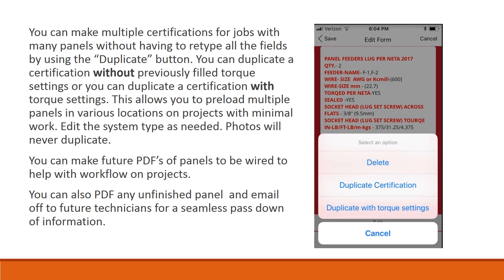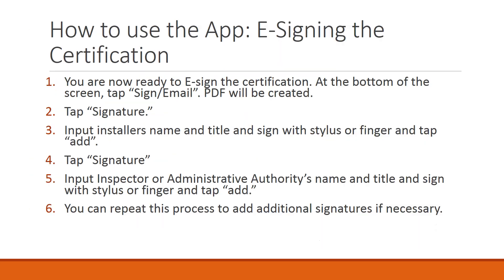E-signing the certification. You are now ready to e-sign the certification. At the bottom of the screen, tap Sign/Email. A PDF will be created. Tap Signature. Input the installer's name and title, sign with a stylus or finger, and tap Add. Tap Signature again. Input the inspector or administrative authority's name and title, sign with a stylus or finger, and tap Add. You can repeat this process to add additional signatures if necessary. Tap Sign/Email at the bottom of the screen.